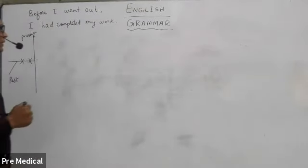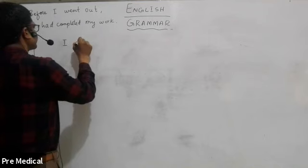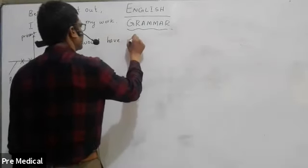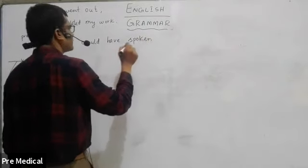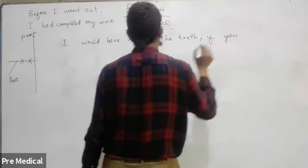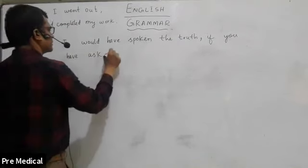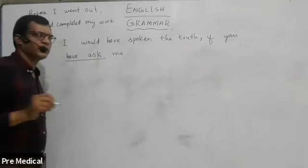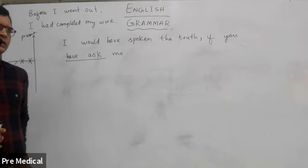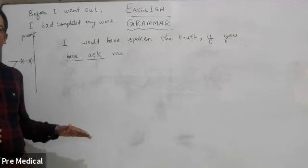The examiner will give us a sentence like this. For example: 'I would have spoken the truth if you have asked me.' In the first class, I told you that there are three different types of sentence completion exercises that will come into the test. One of the sentence completion exercises is where you have one underlined part and then you have a number of options.